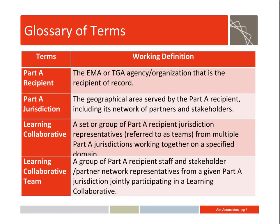We're going to talk about where we've been, where we are, and where we're going. First, let's define a few terms. A Part A recipient is the direct recipient of record — all of you. A Part A jurisdiction is the geographical area served by the Part A recipient, including networks of providers and other partners. A Learning Collaborative is a set of Part A recipient jurisdiction representatives — a team — coming together to work on a specific topic and goal.